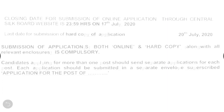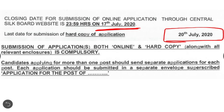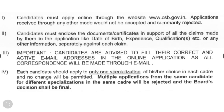Some additional and most important information about this recruitment: the last date for online application is 17th July 2020, and the last date for submission of hard copy of the application is 20th July 2020. Submission of both online applications and hard copies along with relevant enclosures is compulsory. Candidates applying for more than one post should send separate applications for each post. Candidates must apply online through the official website of Central Silkboard, that is www.csb.gov.in.